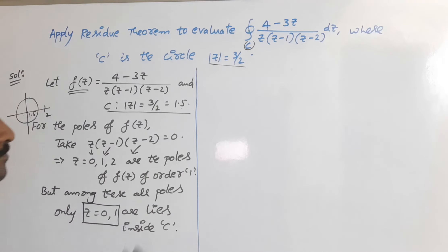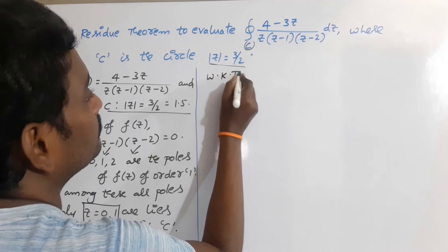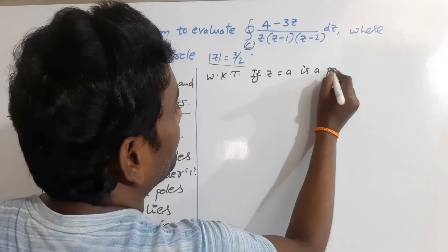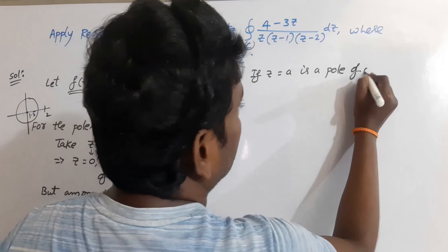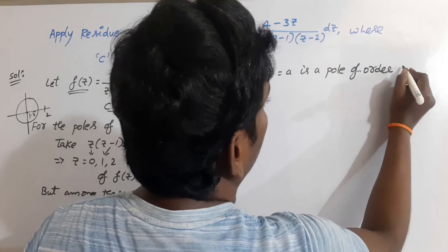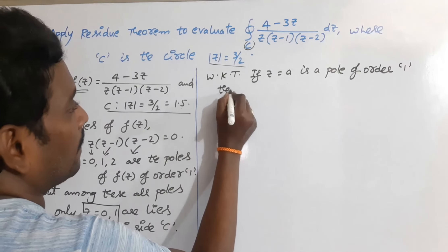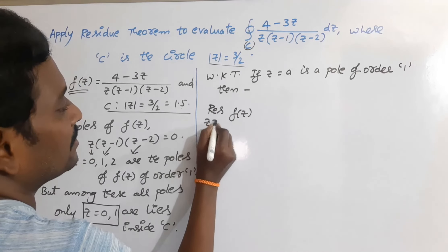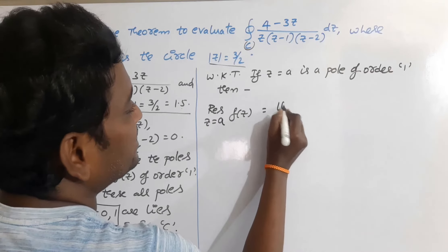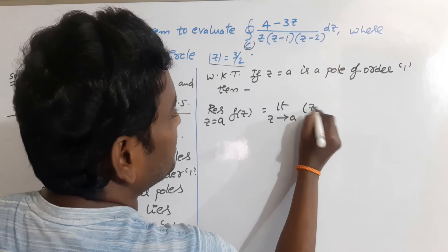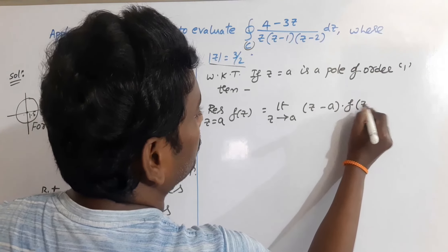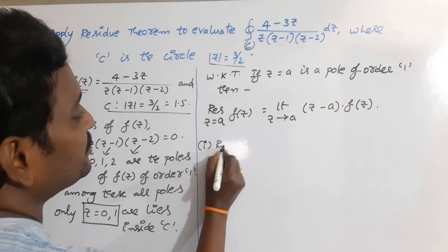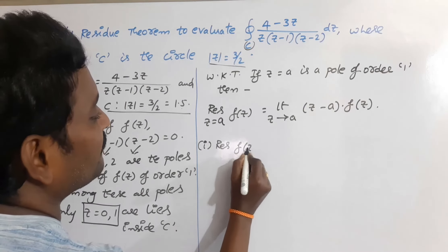We already know that if z = a is a simple pole (a pole of order 1), then the residue of f(z) at that simple pole is equal to the limit as z tends to a of (z − a)·f(z).